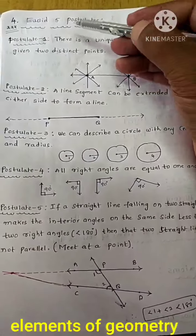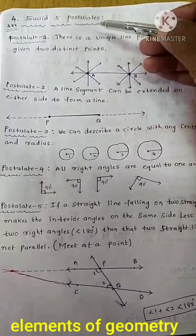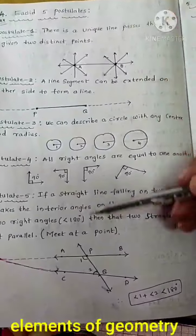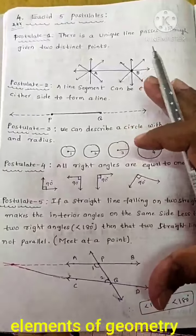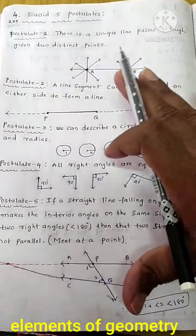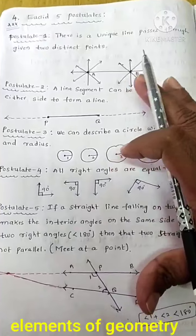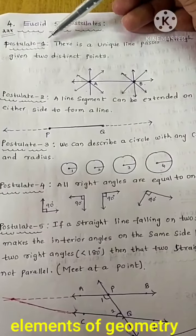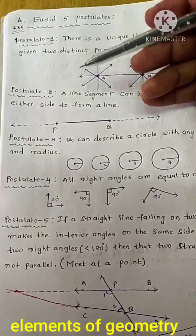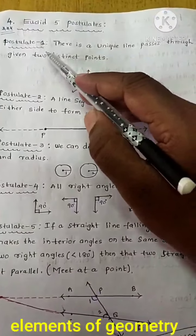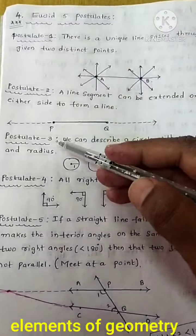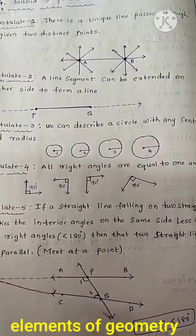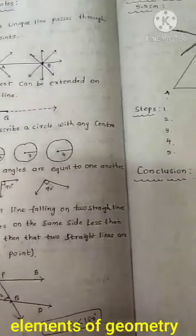Next, Euclid's 5 postulates. Write Postulate 1, 2, 3, 4, 5 as usual. But first, I will explain what the postulates are. I will give a brief explanation of Postulate 1, Postulate 2, Postulate 3, Postulate 4, and Postulate 5 in the next video.